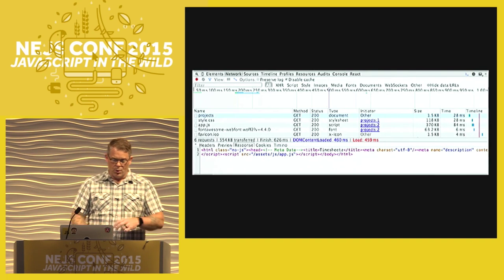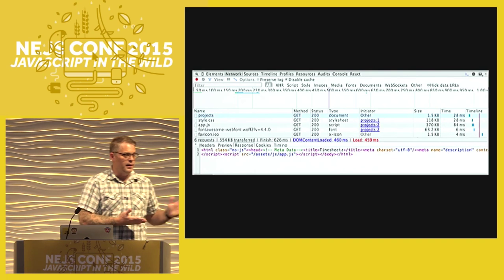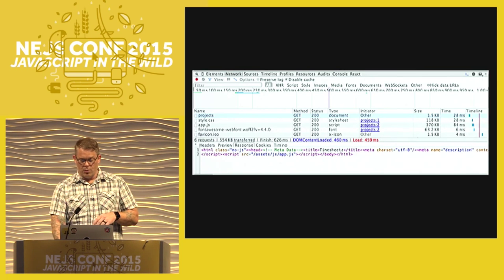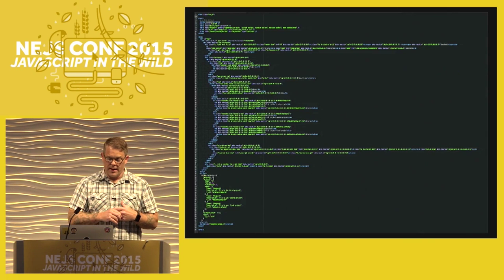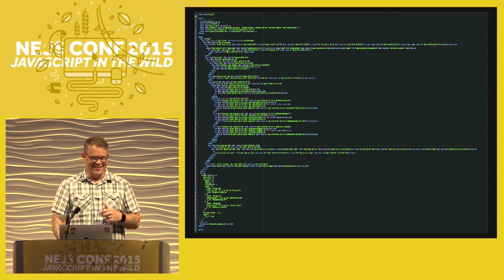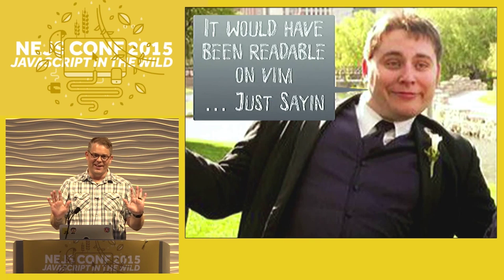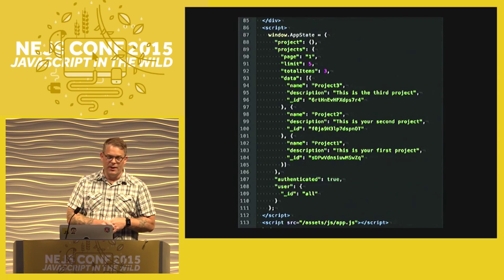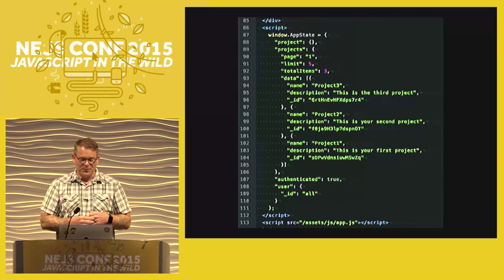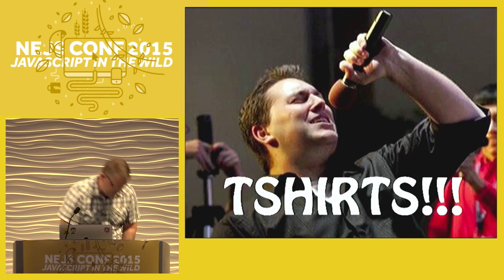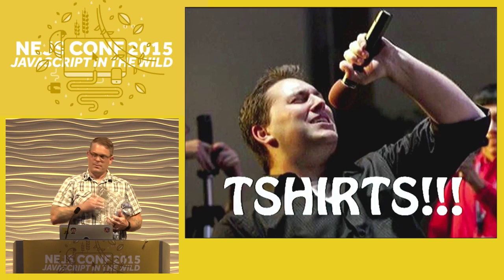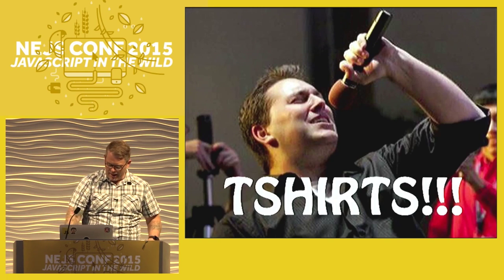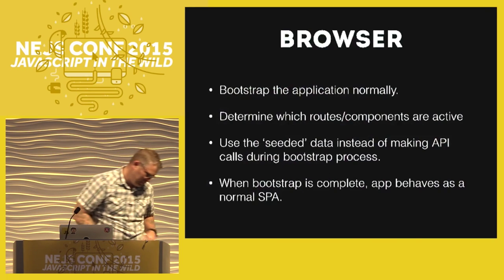The cool thing is in the network tab there's no API call - it's been pre-populated with data. The HTML, when copied into an IDE, is fully pre-rendered. The app state on window looks like this: pre-initialized with projects data, sent across the wire.